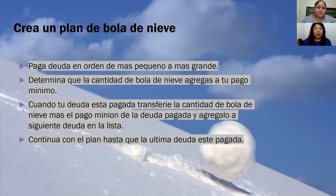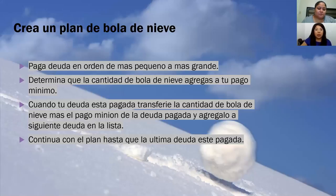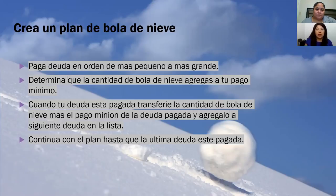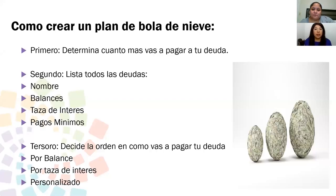Crea un plan de bola de nieve. ¿Qué es una bola de nieve? Comienza de algo pequeño a algo grande — la bola se va haciendo más grande cuando va bajando de la montaña. Si sientes que la deuda es como una montaña, sí lo puedes hacer. Es pagando la deuda en orden de pequeño a más grande. Determina la cantidad de bola de nieve para agregar a tu pago mínimo. Cuando tu deuda esté pagada, transfiere la cantidad de bola de nieve más el pago mínimo de la deuda pagada y agrégalo a la siguiente deuda en la lista. Continúa con el plan hasta la última deuda.